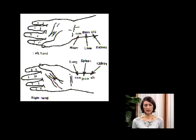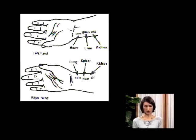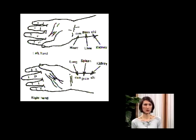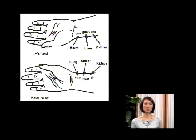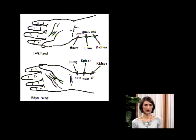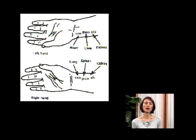We can also look at the pulse in terms of the different organs. We take the pulse as a whole on the left and right side, and also separately finger by finger. On the left side, the first position represents the heart, the second position represents the liver, and the last position represents the kidneys. In Chinese medicine, the heart and liver are responsible for pumping and storing the blood, so taking the left pulse together with three fingers as a whole diagnoses the quality of the blood in the body, while taking it separately shows how the heart, liver, and kidneys are functioning.